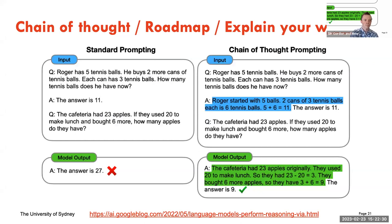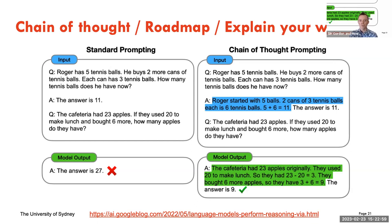This is the worked example, and you give it a similar but different question you actually wanted answered. It gets it completely wrong because it just predicted statistically likely next words. However, you can make it more accurate by telling it to show its working in the worked examples — explaining: Roger started with five balls, two cans of three tennis balls each is six, five plus six is eleven.